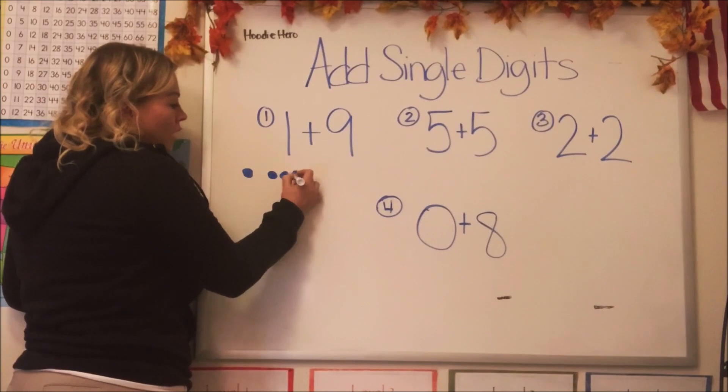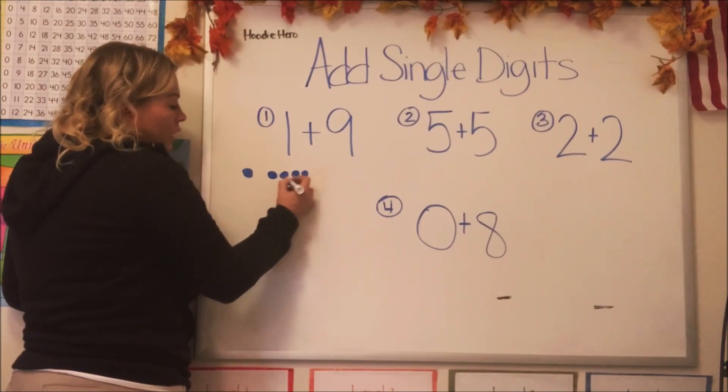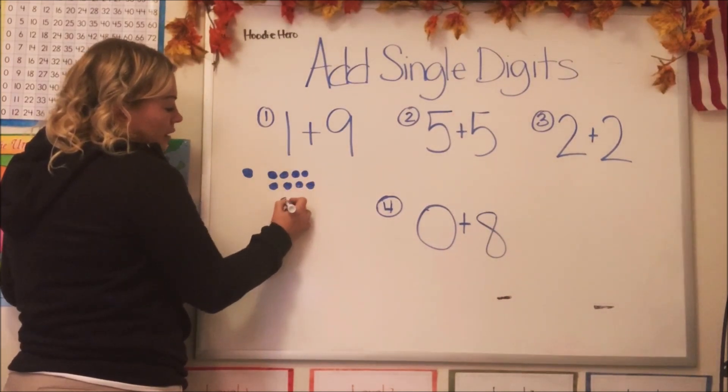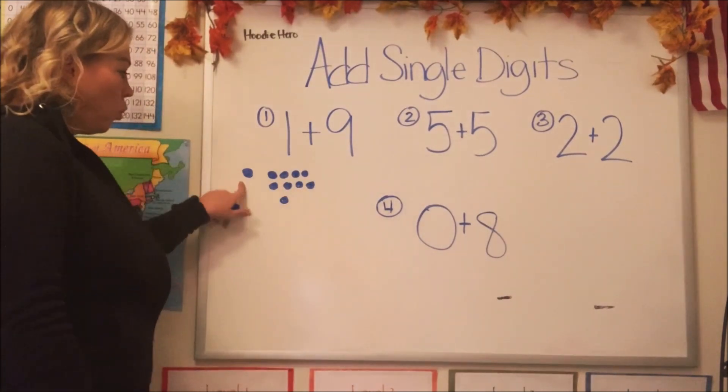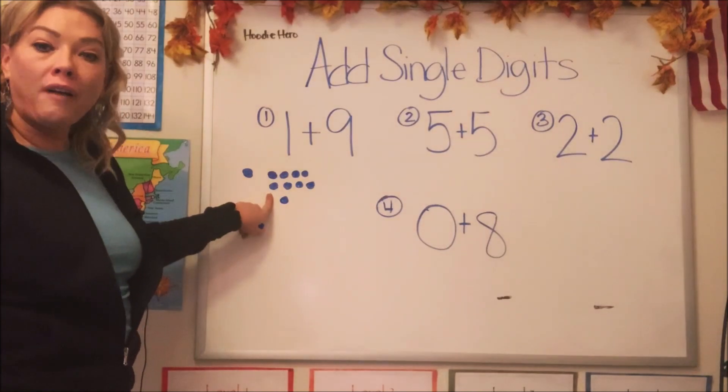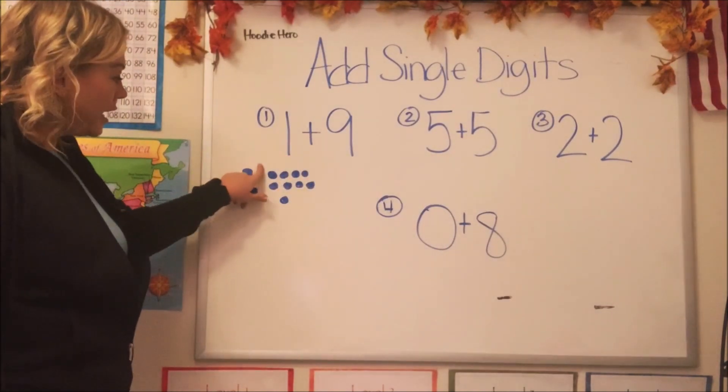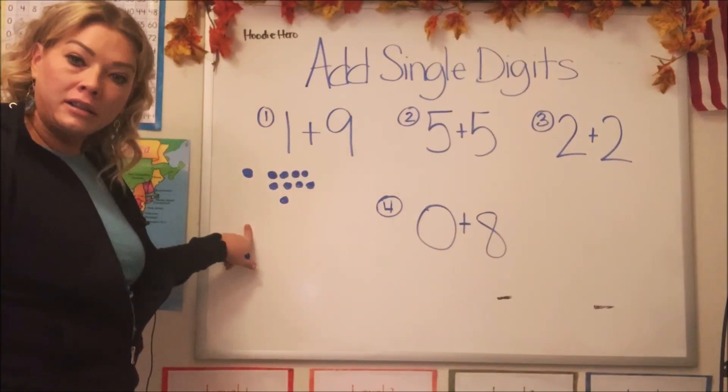One, two, three, four, five, six, seven, eight, nine. So one plus nine. Now to find the answer, we just have to add them all up. Let's count all the circles and that'll tell us the total.